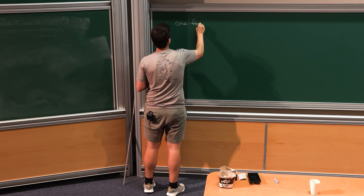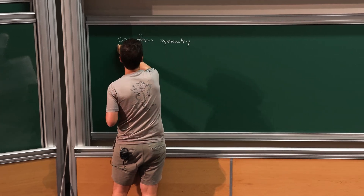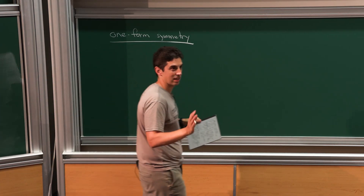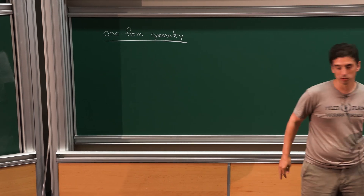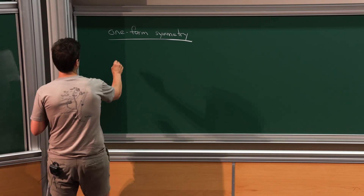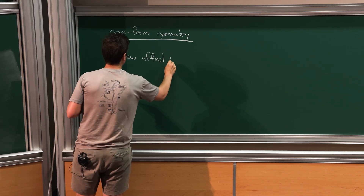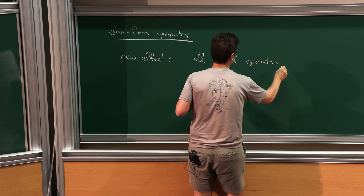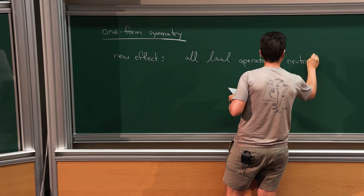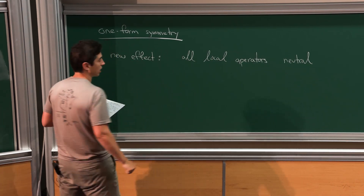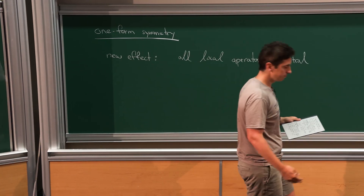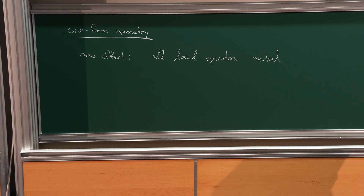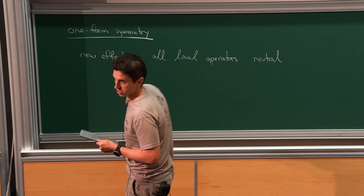Let's start with one-form symmetry. You've had wonderful lectures by Thomas about one-form symmetry and some introduction to higher group symmetry. I'll have some overlap for the next 10–15 minutes to bring to the front the things we'll need, and then we'll diverge. The new effect — which no doubt you heard about — is that all local operators are neutral. So if you have a one-form symmetry in a low-energy effective action, you just cannot violate it by adding any local operator deformation to the action. It's impossible because the one-form symmetry does not act on any local operators. There is no most-relevant charged operator; the same method will not work.